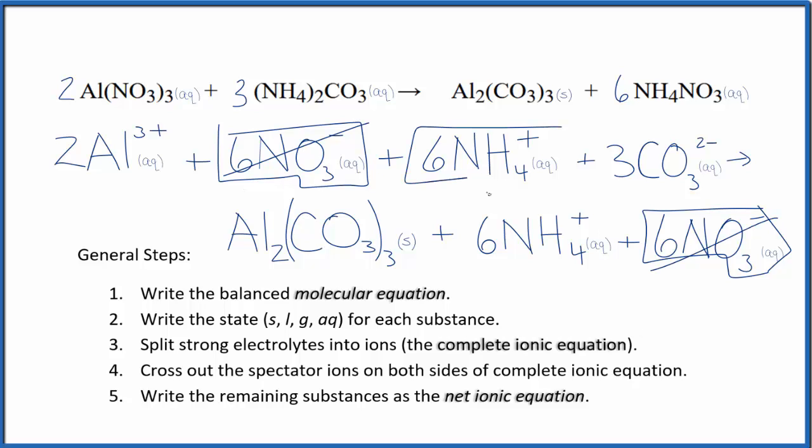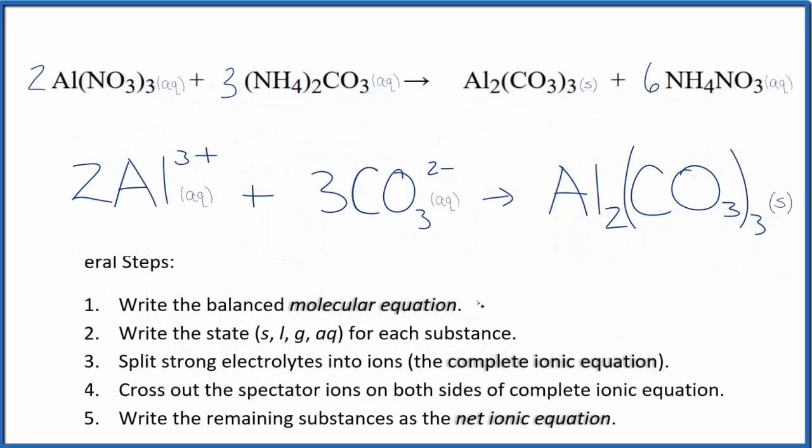Six ammonium ions in the reactants and in the products are spectator ions; we cross them out. What's left is our net ionic equation for Al(NO3)3 plus (NH4)2CO3. Let's remove the spectator ions, and this is the balanced net ionic equation.